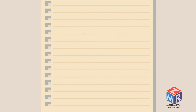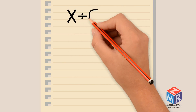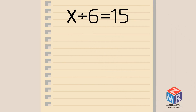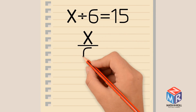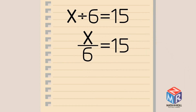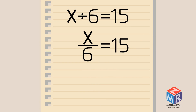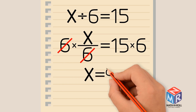Let's try another example. x divided by 6 equals 15. We can also write this in fraction form by putting x over 6. Right now, our x value is not by itself because it is being divided by 6. To undo this operation, we need to multiply both sides by 6. Now we can cancel out. We are left with x equals 90.